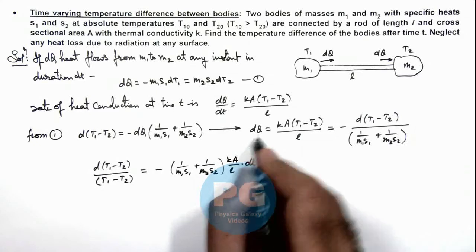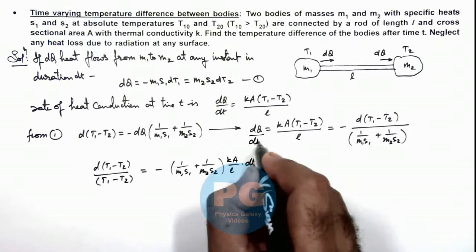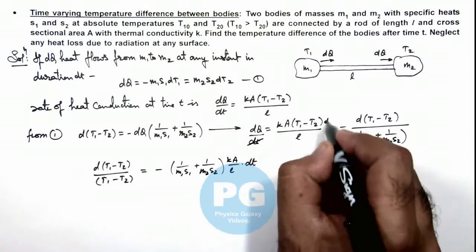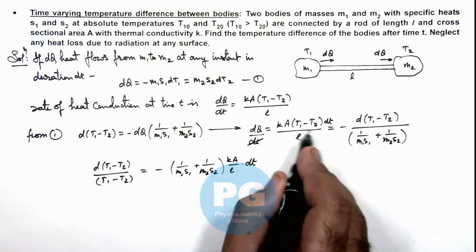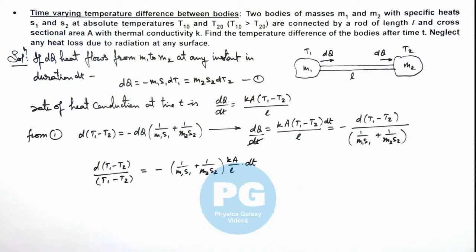So this is dQ/dt which we are calculating, and if we take this dt on this side, this is the value of dQ which can be equated to this term.